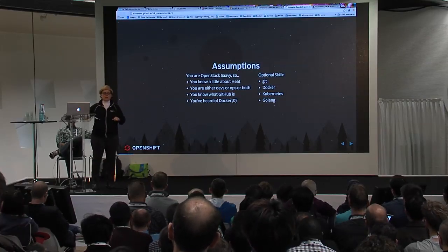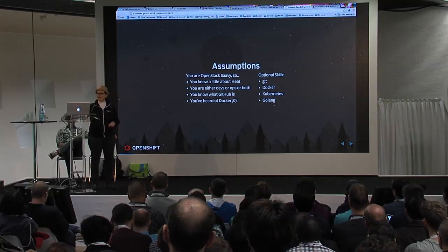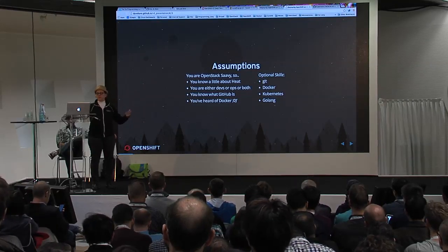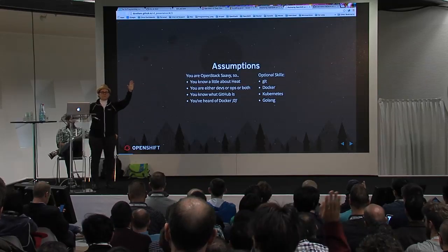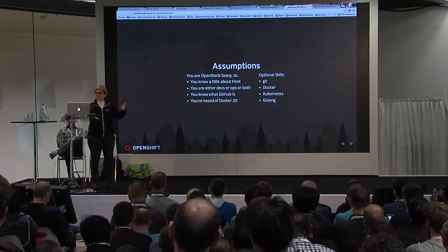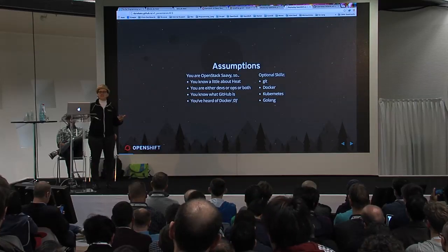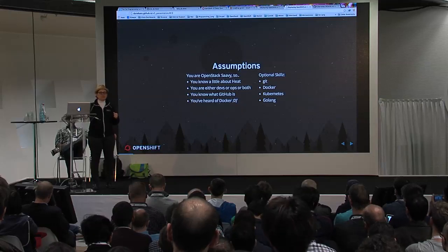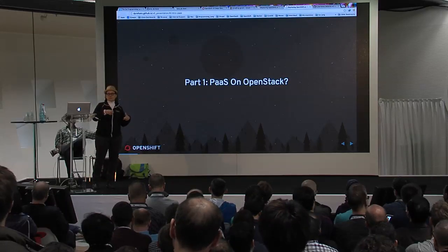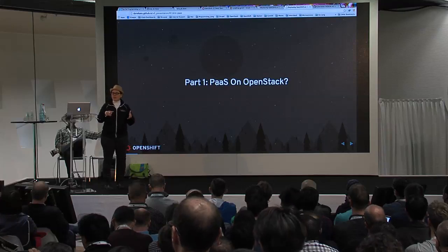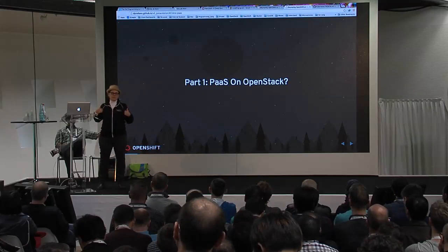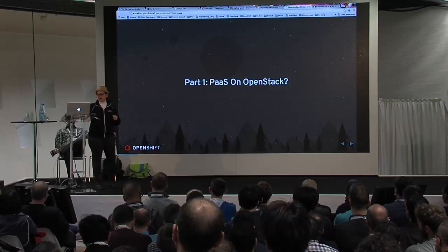Some assumptions: I'm not going to explain OpenStack today, so you need to be OpenStack savvy. You know a little about Heat. You're either a developer, operations person, or both. You know GitHub and you've heard about Docker. Optional skills: Git, Docker, Kubernetes, and Go. OpenShift Origin v2 was a Ruby and Rails app; for v3 we've rewritten the entire thing in Go.